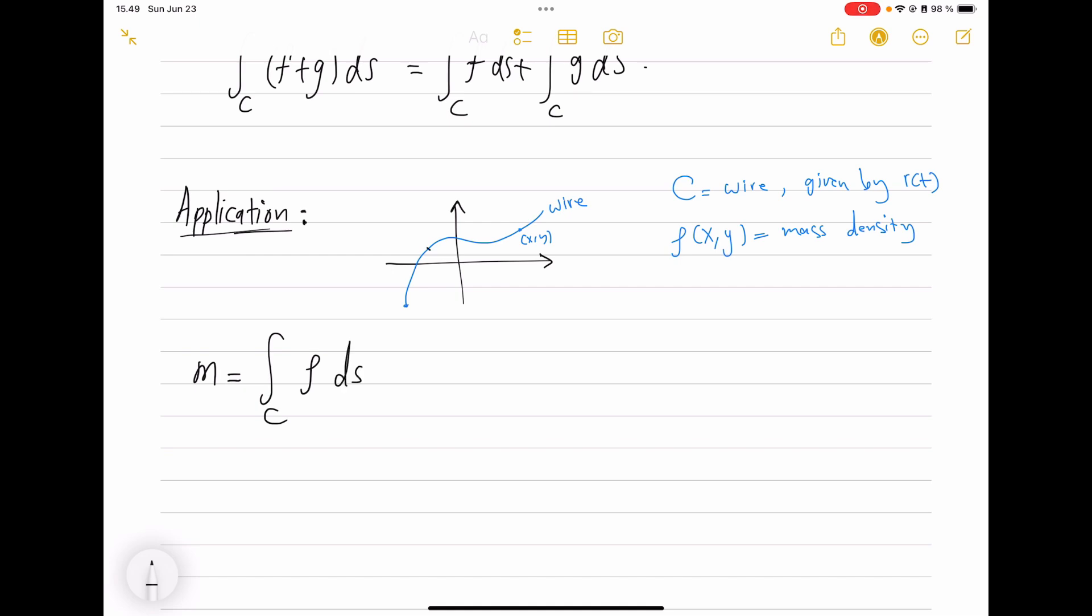Suppose we have this wire sitting in the plane, made out of some material. Given a point (x,y), we have the mass density ρ(x,y)—so mass density—and the curve is the wire given by some parameterization r(t). Now the question is, where is the center of mass of this object and what is the total mass of this object?